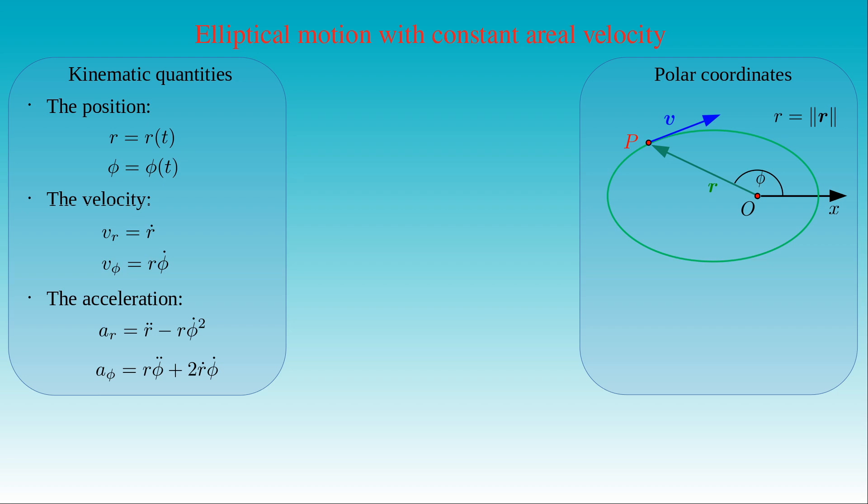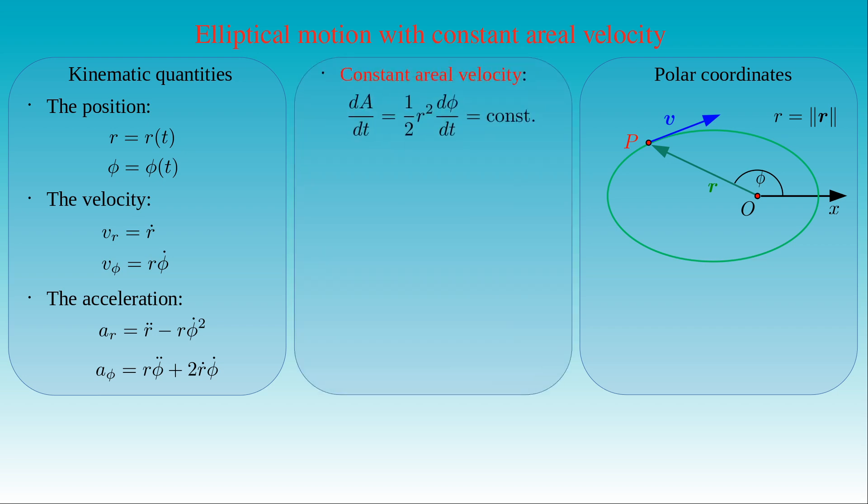Now we assume that the aerial velocity of the traveling body is constant, that is the magnitude of the time derivative of the area A swept out by the body is constant along the motion. As a result, the half of the square of the radial coordinate R times the derivative of the azimuthal angle phi is constant.